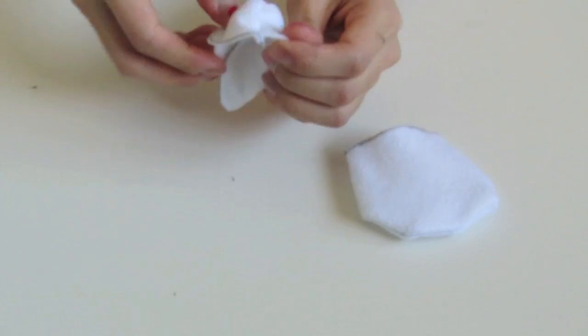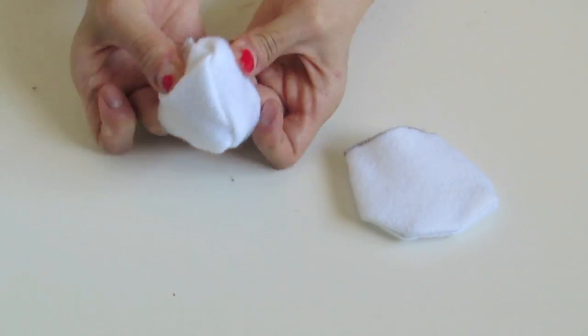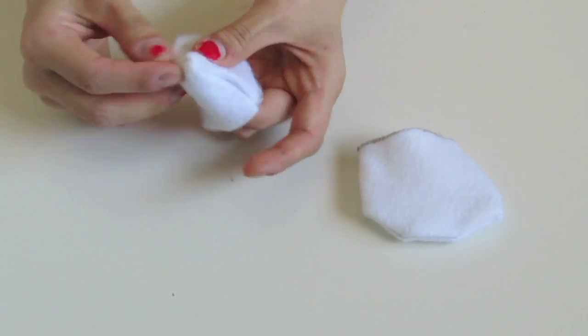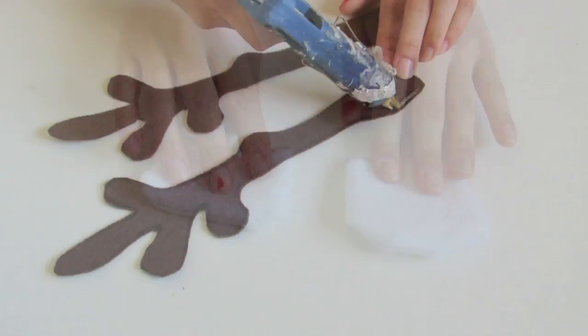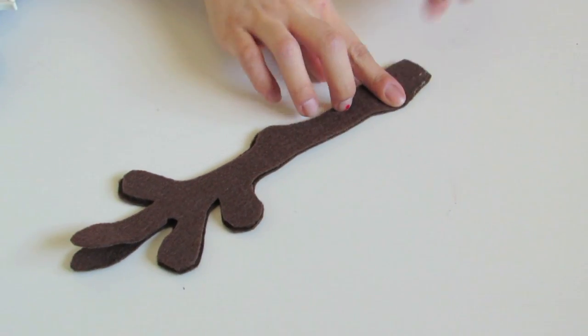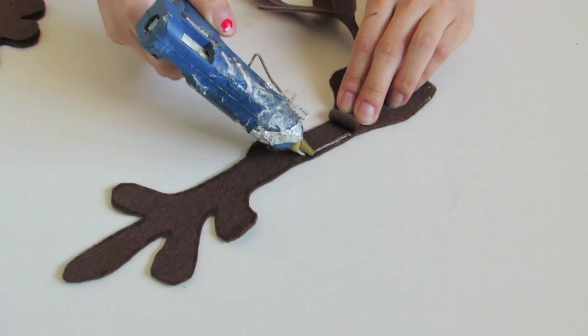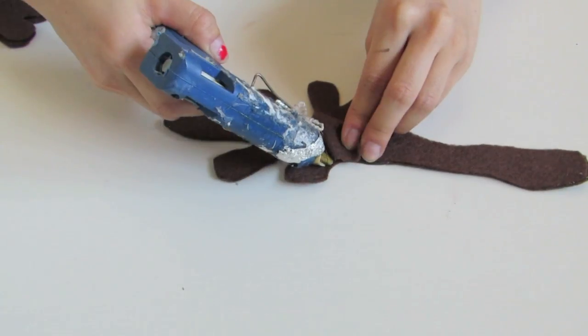So now you just want to flip the feet inside out. And then for the arms, you just want to put glue on the borders and glue it together. Make sure you leave space inside so that you can stuff the arms.